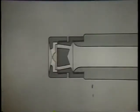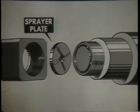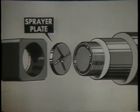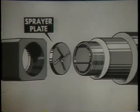Now let's see the action of the sprayer plate in more detail in an exploded view. You can see how the oil passages in the atomizer nozzle guide the oil into the slots of the sprayer plate, how the slots give the oil a very rapid whirling motion in the whirling chamber, and how the whirling oil emerges from the sprayer plate orifice or opening as a hollow cone of mist-like oil particles.